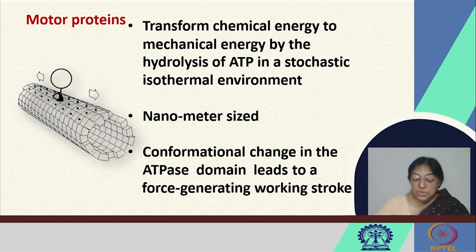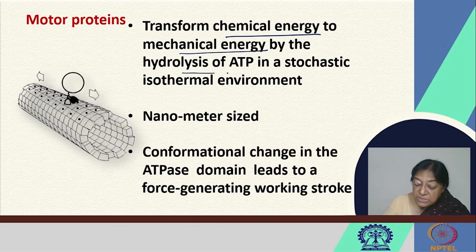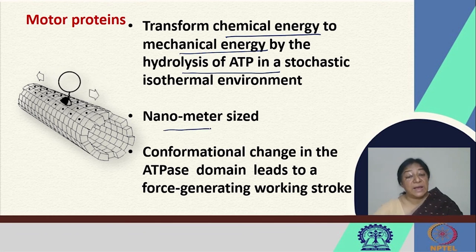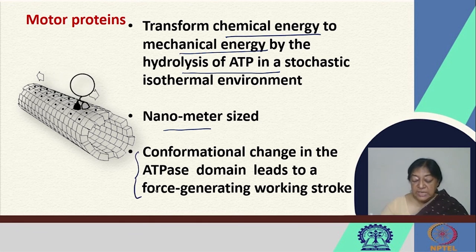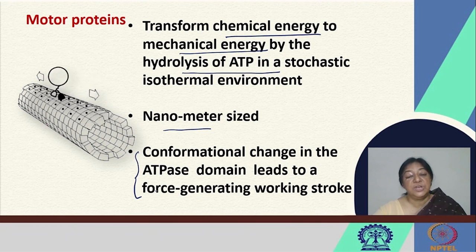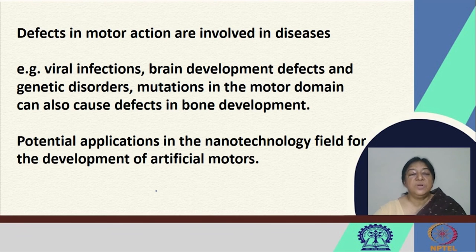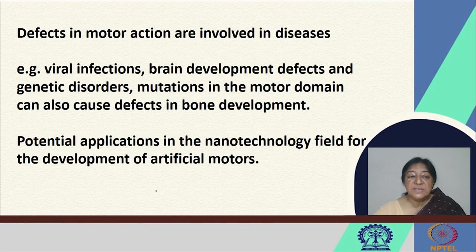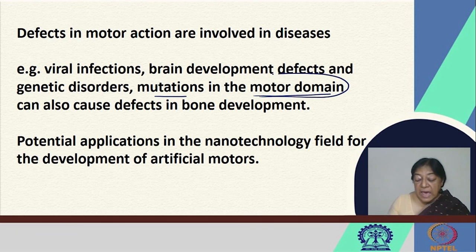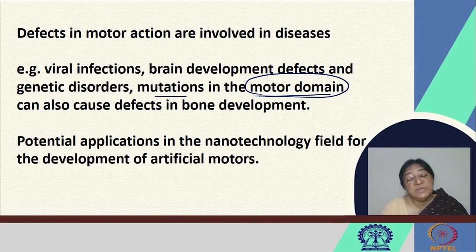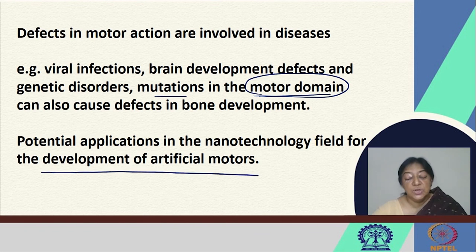In tubulin-based motility we have the motor proteins dyneins and kinesins, and in actin-based motility we have the myosins. In all cases, conformational changes occur in the motor domain due to ATP hydrolysis, where chemical energy is transformed into mechanical force, producing movement. Defects in motor action can be involved in diseases such as viral infections, brain development defects, and genetic disorders caused by mutations in the motor domain. There are also potential applications in nanotechnology, with research going on in the development of artificial motors to explore how cargo may be transported.